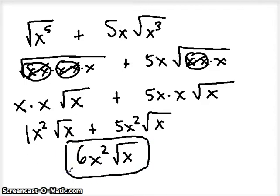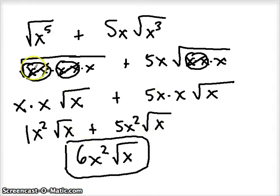So occasionally you will have to simplify first in order to add — get those radicands to be the same, get your index to be the same — and then go ahead and add or subtract.